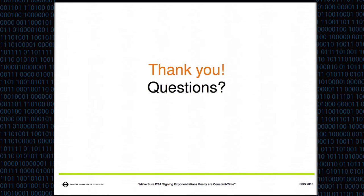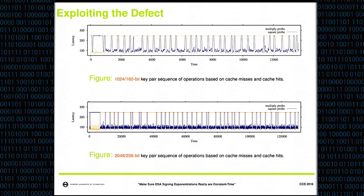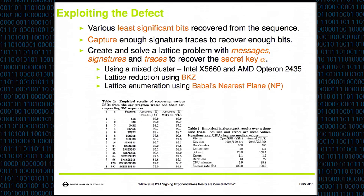You used a performance degradation technique and showed a nice picture of cache timing measurements. But in a real server with many other processes also using OpenSSL, do you get a lot of noise? Yes, you get noise, and for that reason you require more signatures, but it's still possible to recover the secret key. For OpenSSH we used 260 handshakes — that's 260 signatures — and 580 for TLS, for these key sizes.